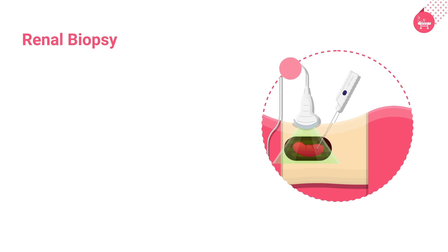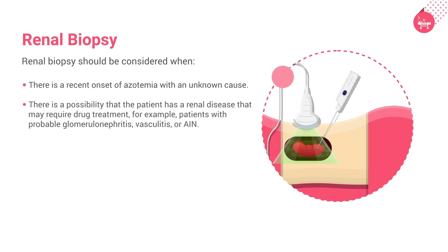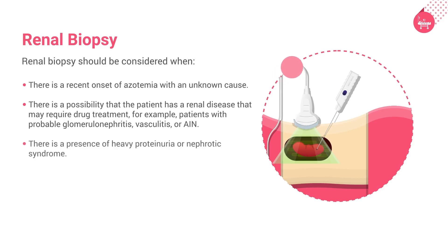Renal biopsy is done for patients suspected to have parenchymal renal disease. Renal biopsy should be considered when there is a recent onset of azotemia with an unknown cause, when there is a possibility that the patient has a renal disease requiring drug treatment — for example, steroids or cytotoxic drugs for patients with probable glomerulonephritis, vasculitis, or AIN — or when there is heavy proteinuria or nephrotic syndrome. A biopsy can also be done for prognosis.